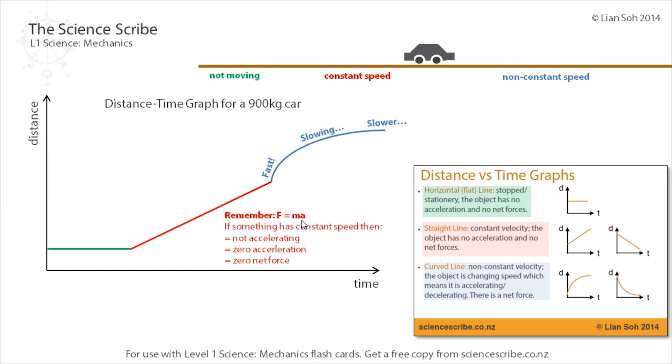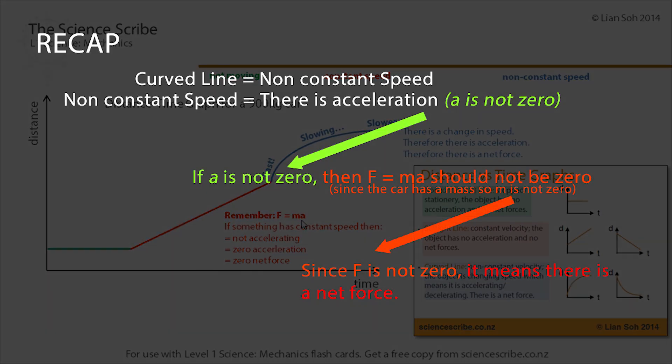So what I have here is non-constant speed. Curved lines refer to non-constant speed. Now if I've got a non-constant speed, then that means there is a change in speed, and if there is a change in speed it means that there must be an acceleration.